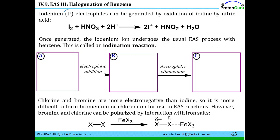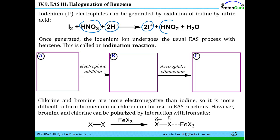If we want to do a substitution reaction where we substitute an H for an iodine on benzene, we need an I+ cation. We can generate that cation by doing a redox reaction — oxidizing the neutral iodine atoms in I2 to I+. We need two cations to balance the positive charge, using nitric acid as the oxidizing agent. The nitrogen gets reduced, giving HNO2 instead of HNO3, with protons going onto water. This is how you get the two I+ cations.